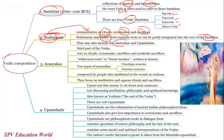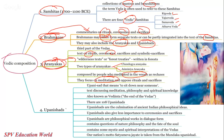Aranyakas are texts written in the forest — the third part of the Vedas. They contain ritual ceremonies, sacrifice symbols, and are wild in nature. Two Aranyakas are Chandogya Aranyaka and Jaiminiya Aranyaka. They were composed by sages who meditated in forests — mainly concentrating on meditation and opposing the blind rituals and sacrifices we follow today.